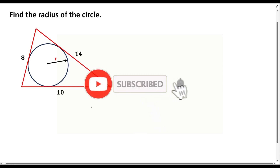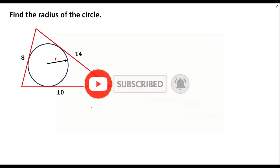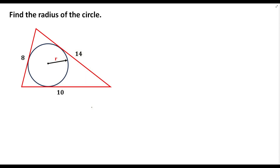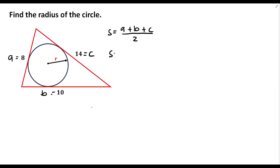So let's solve this problem. To find the radius of the circle inside the triangle, first we need to find the semi-perimeter of the given triangle. The formula for the semi-perimeter is side A plus side B plus side C over 2. We can label this side as side A, this side as side B, and this side as side C — note that these variables can be interchanged.